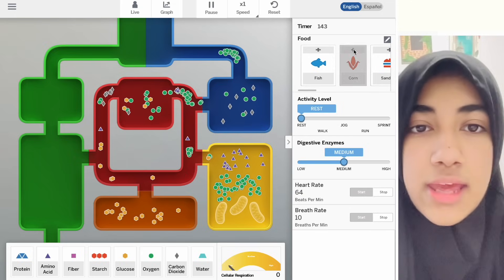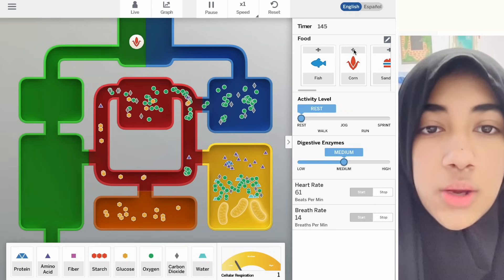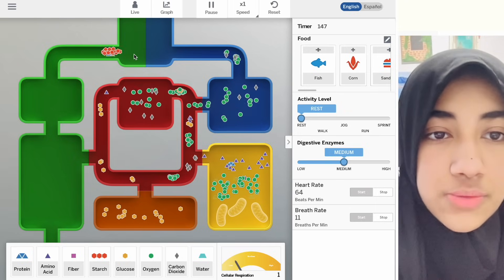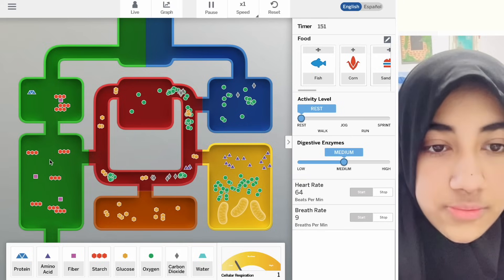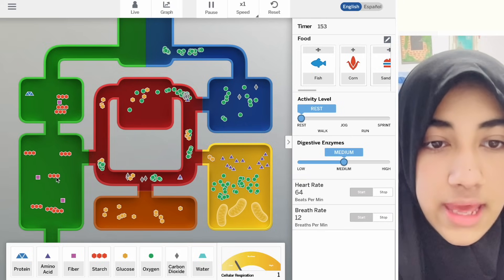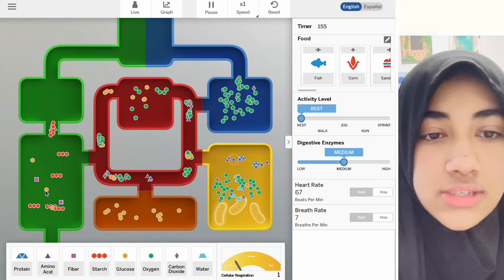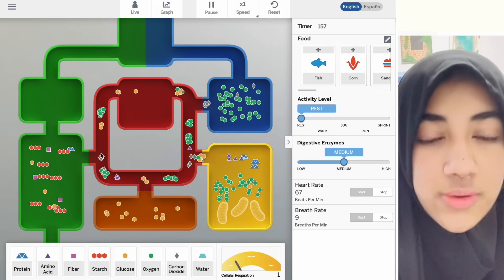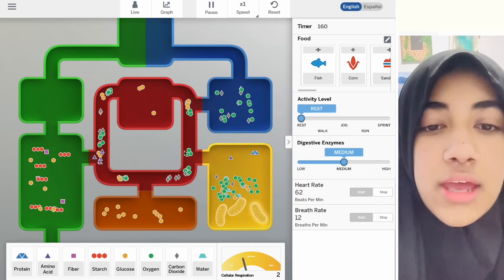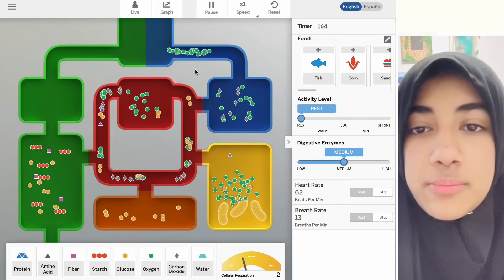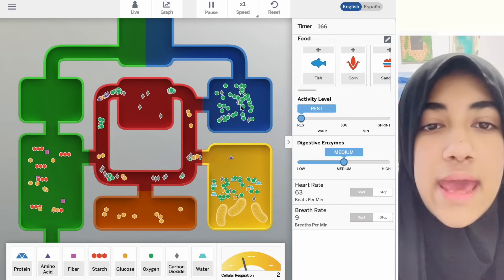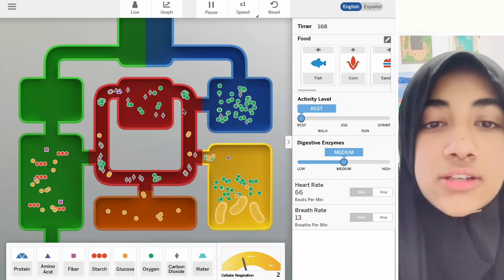We can try this with other things, so feed the corn. Then the corn will be broken down into starch. Starch gets broken down into glucose. This glucose will enter the circulatory system. Some other glucose will be stored in here along with oxygen.